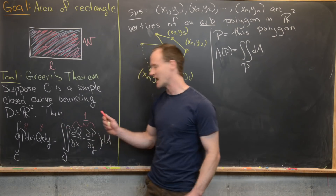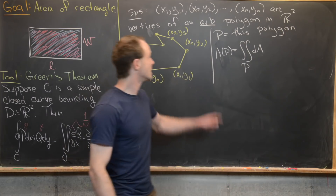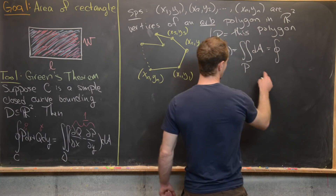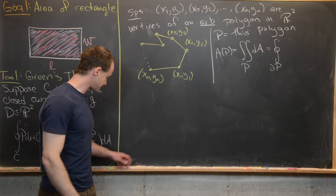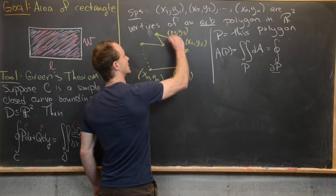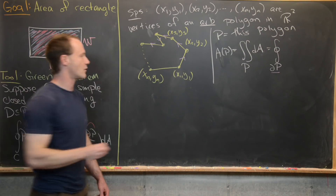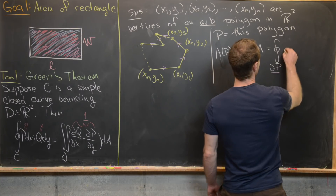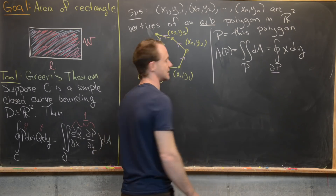That means the area equals the line integral over the boundary of the polygon — which I'll call ∂P — of x dy. The boundary consists of these line segments oriented counterclockwise, which is a necessity. This corresponds to Q being x and P being zero.